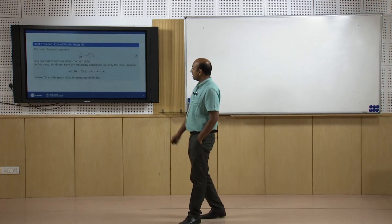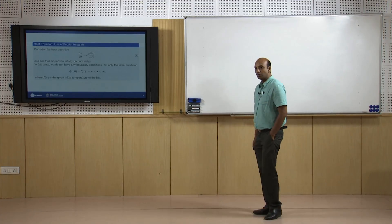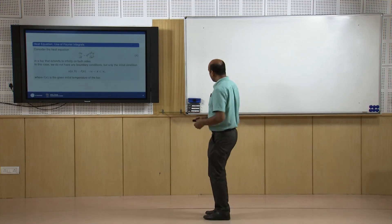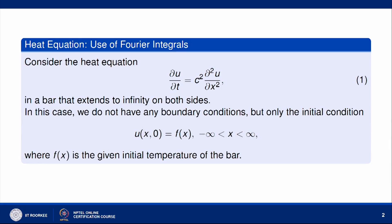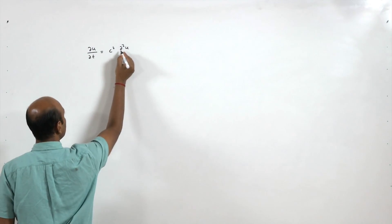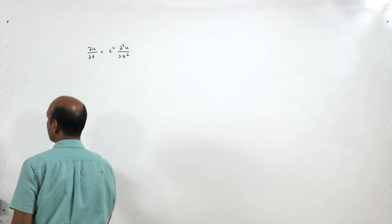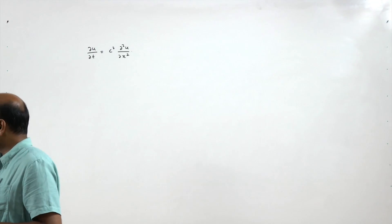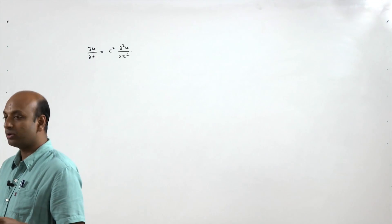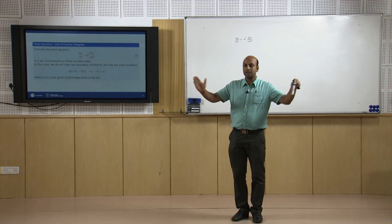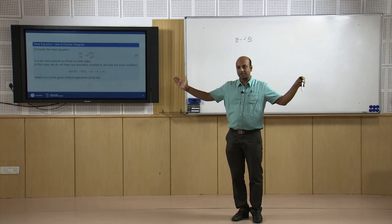Now consider the heat equation — this is a use of Fourier integrals. The heat equation is given by del u by del t equals c squared del squared u by del s squared. Suppose this is a bar which extends to infinity on both sides, that is, the bar is not of finite length; it tends to infinity from both sides.